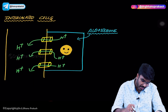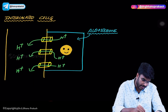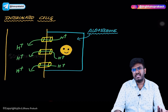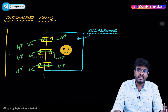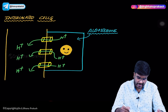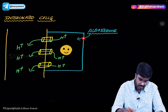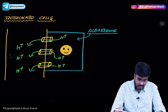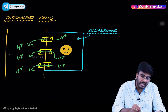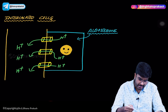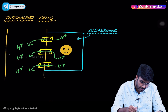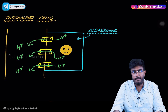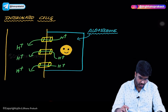If the same aldosterone acts on intercalated cells — specifically type A intercalated cells — protons are being lost. So aldosterone causes proton excretion from the type A intercalated cells. These are the overall effects of aldosterone.